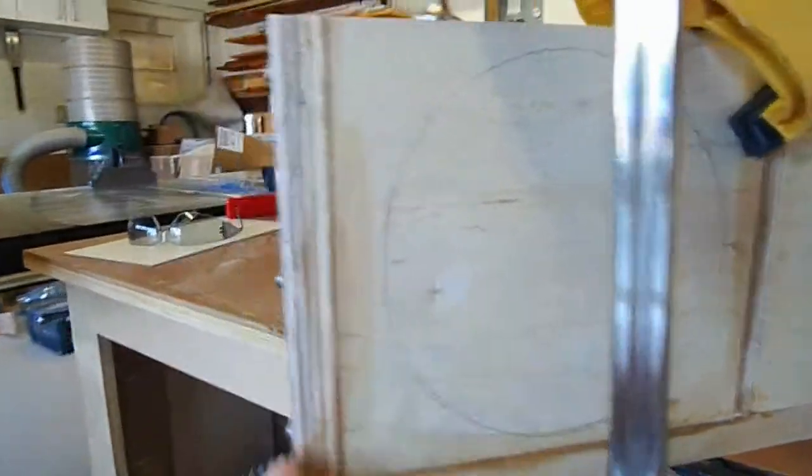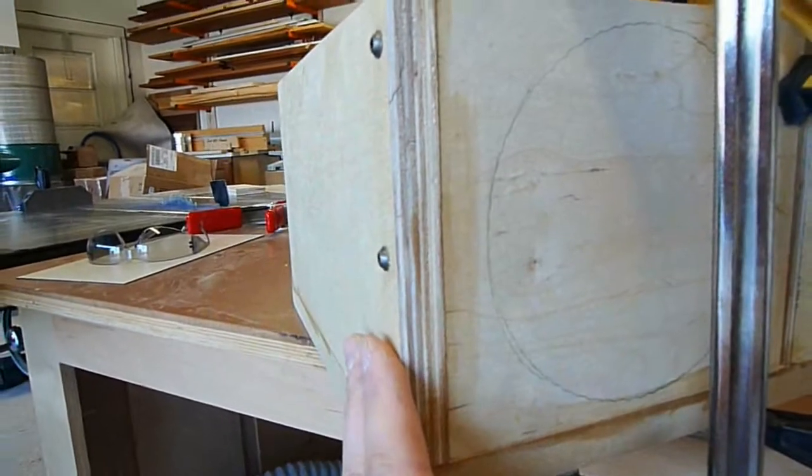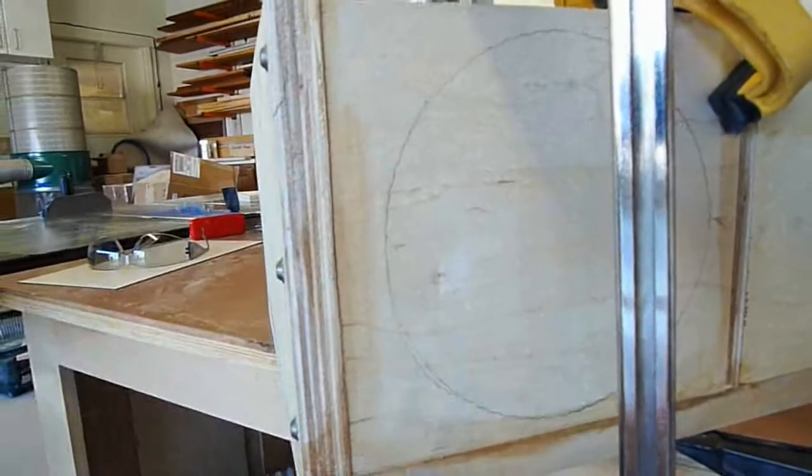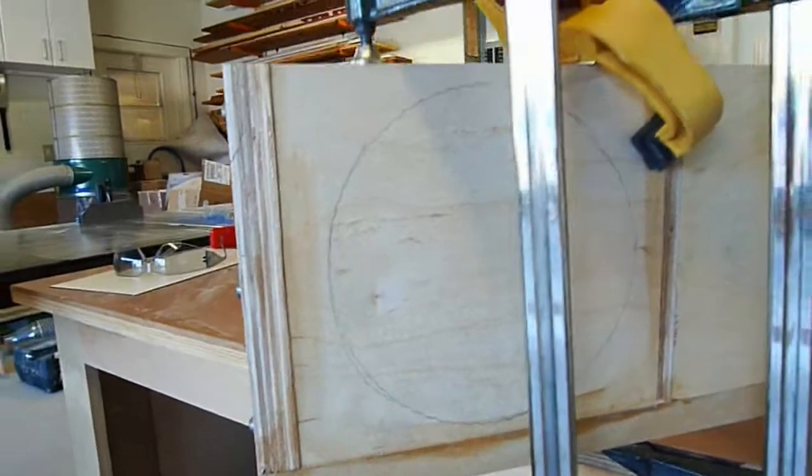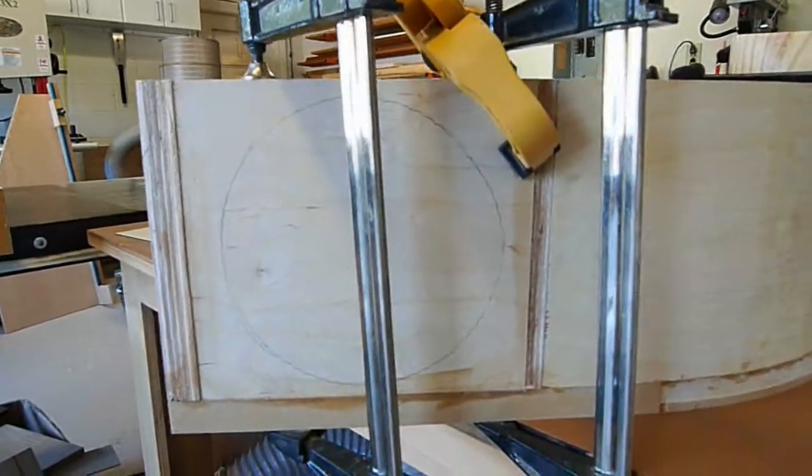The reason I did that was because I put some screws in the side right here. These are temporary. I'll remove them later. I just wanted the glue to grab everything and hold it tight because there's no real good way to get a clamp on there because of the roundness of the form. That's the best I could do.